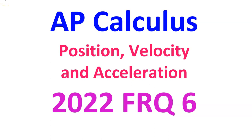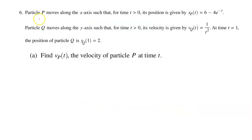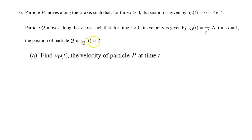In this video, I will walk you through free response question number 6 from the 2022 AP Calculus exam. This problem is primarily about position, velocity, and acceleration. Particle P moves along the x-axis such that for time t greater than 0, its position is given by xp of t equals 6 minus 4 e to the negative t power. Particle Q moves along the y-axis such that for time t greater than 0, its velocity is given by vq of t equals 1 over t squared. At time t equals 1, the position of particle Q is yq at 1 equals 2.